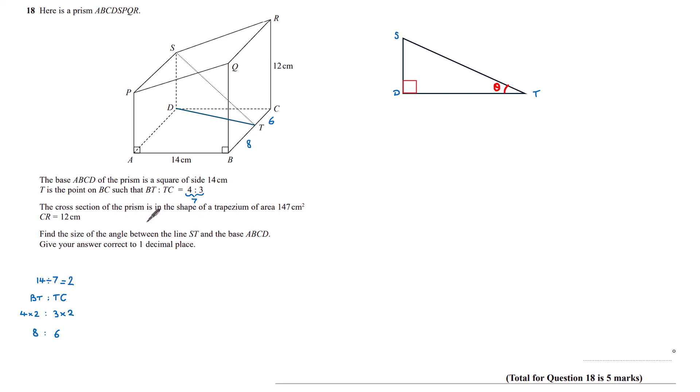The cross section of the prism is in the shape of a trapezium of area 147 centimeter squares. Here's my trapezium on the face of this shape, PQAB, and I know the area to be 147. I'd be quite interested in finding this height here, PA, because that will be the same as the height of my SDT triangle, the distance between S and D.